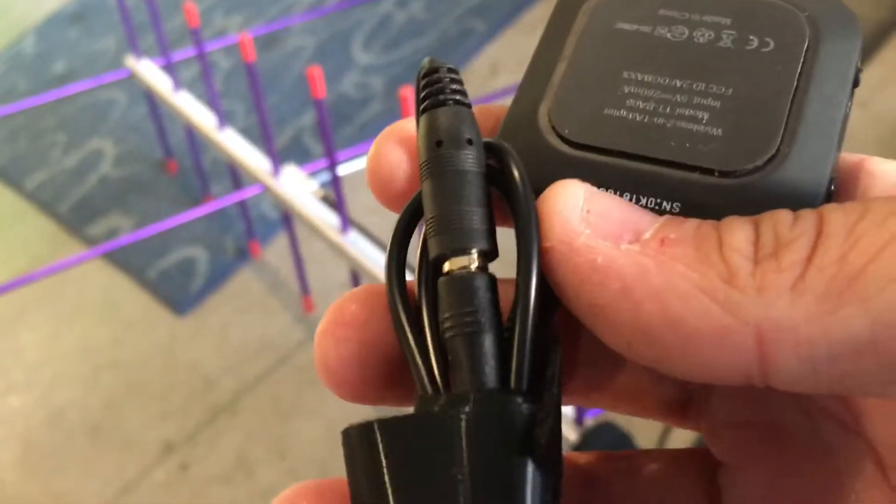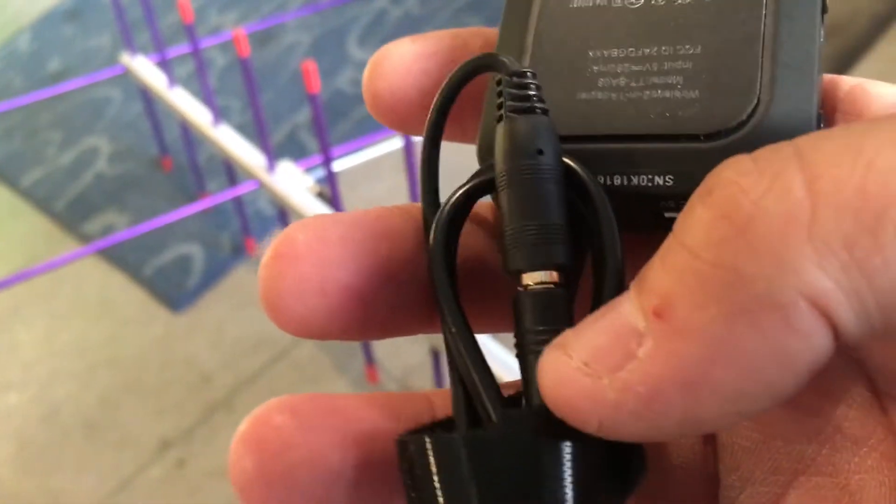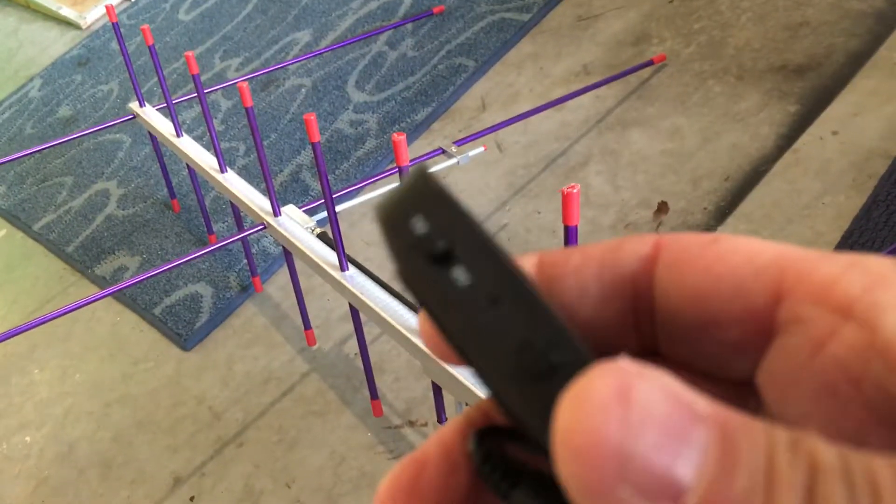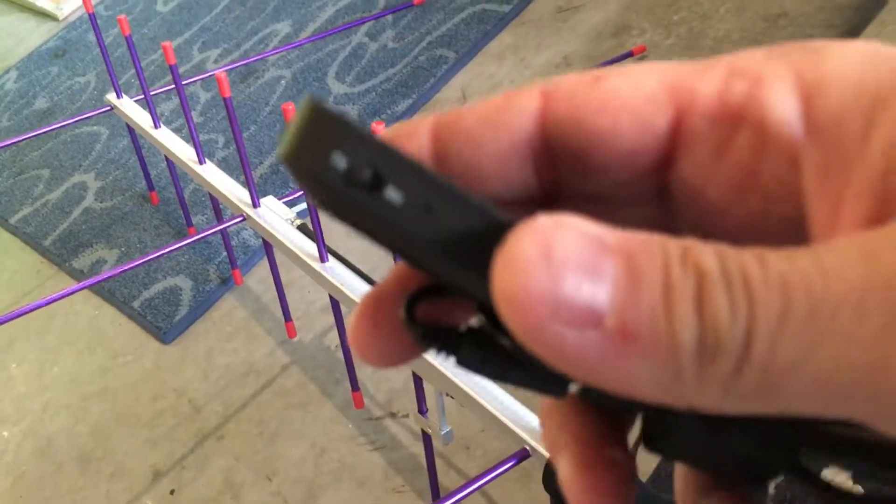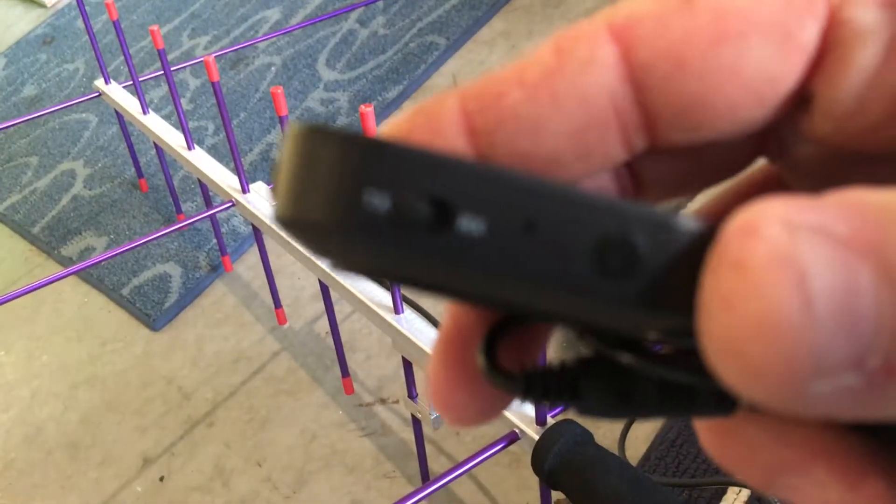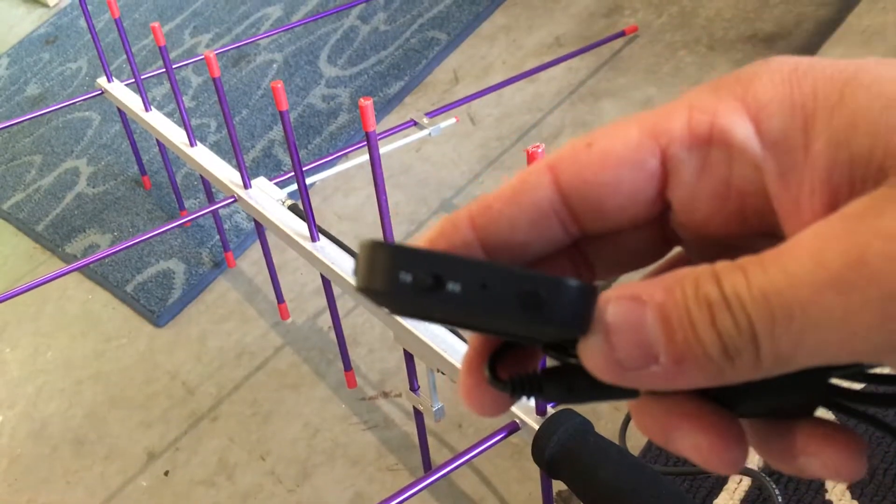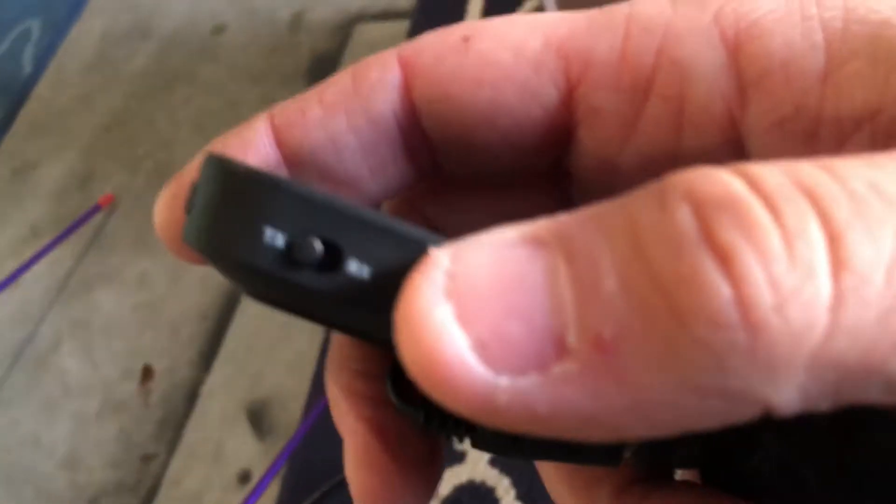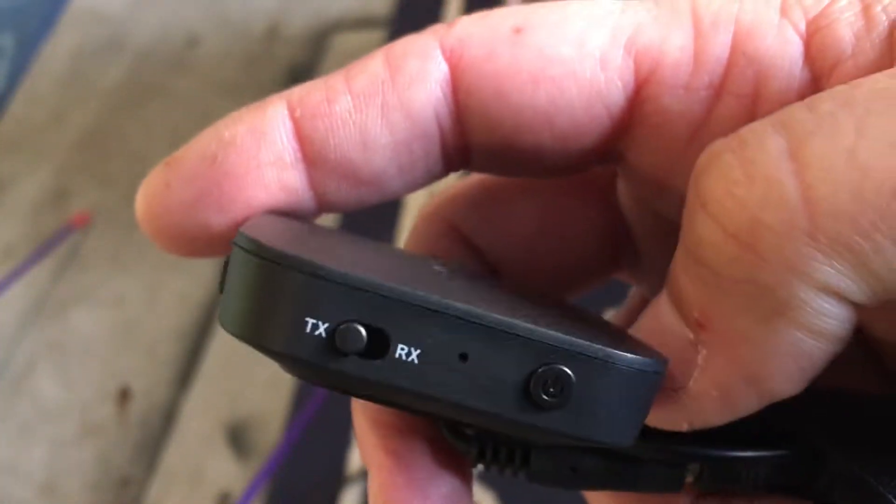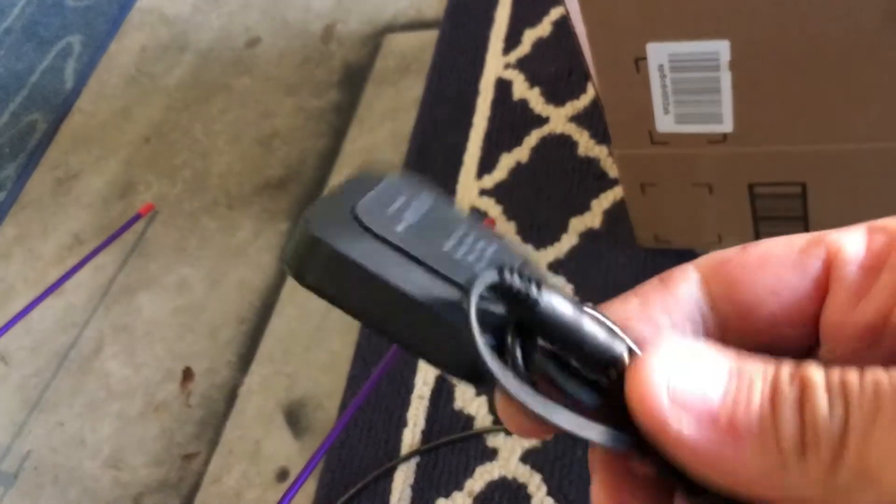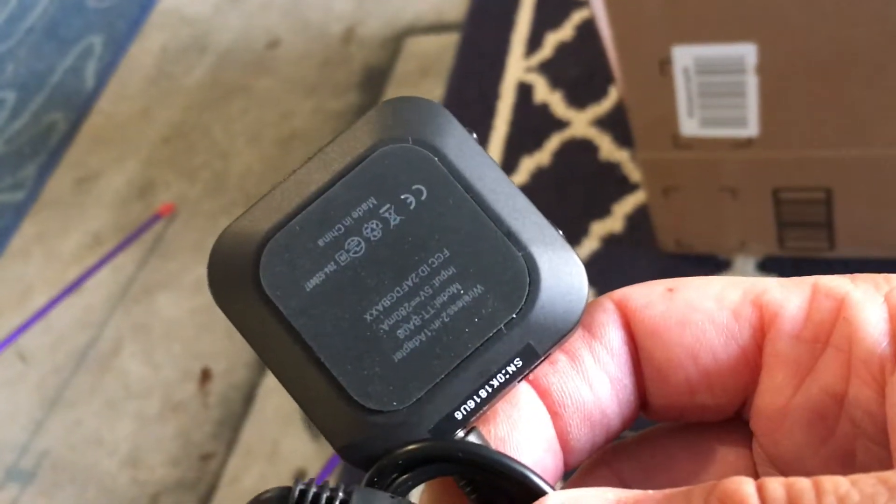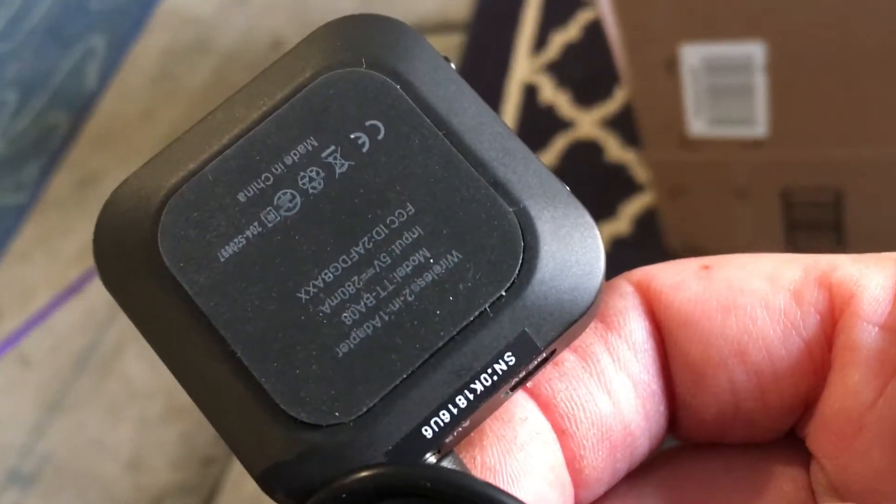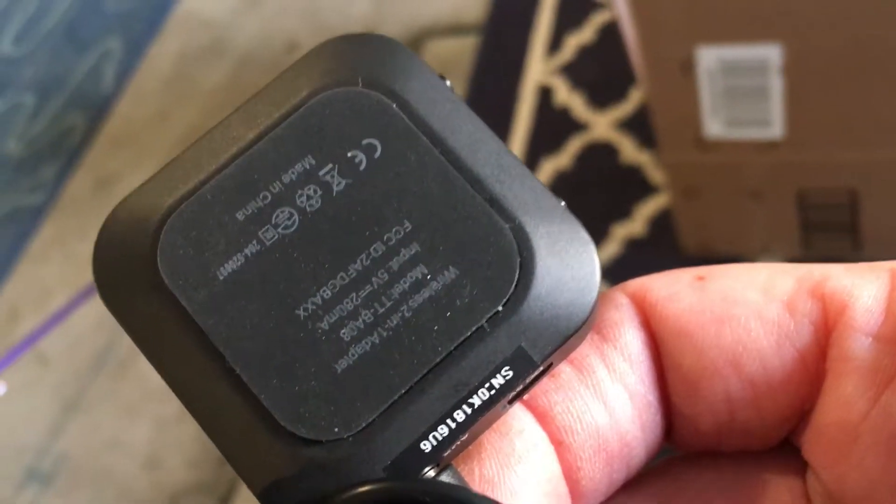It comes with the 3.5 millimeter, but I have an adapter to go from 3.5 to 2.5, and I plug it into the speaker jack on my HT. Let me try to zoom in. This thing is able to transmit and receive, and it's able to connect to Bluetooth either speakers or headphones at the same time.